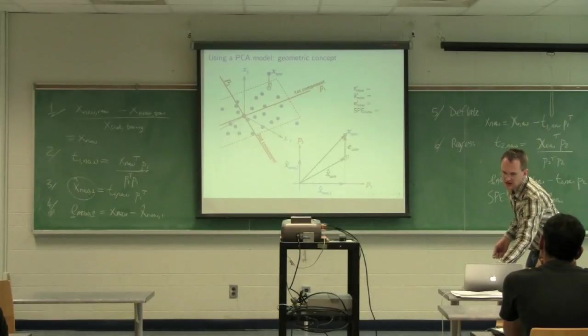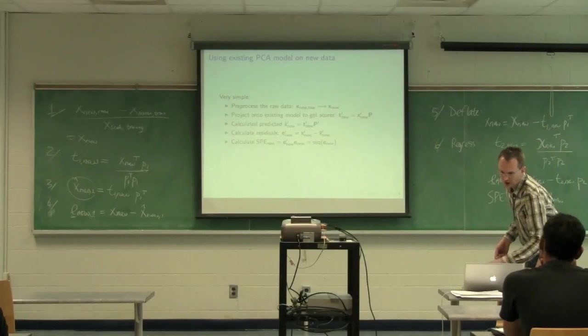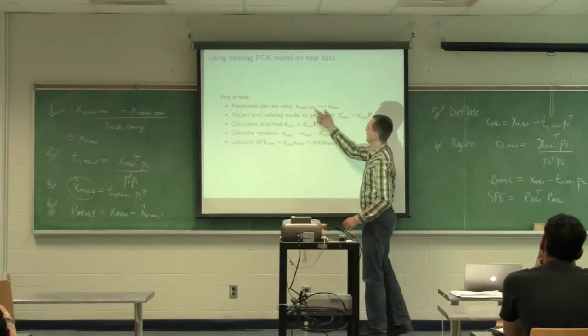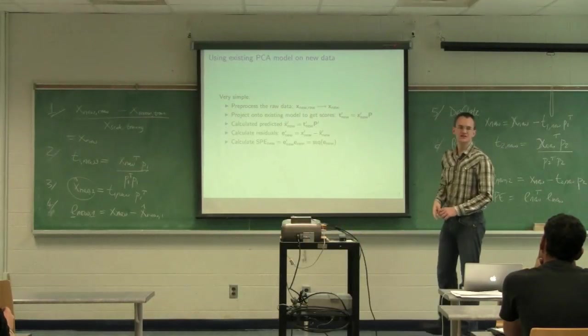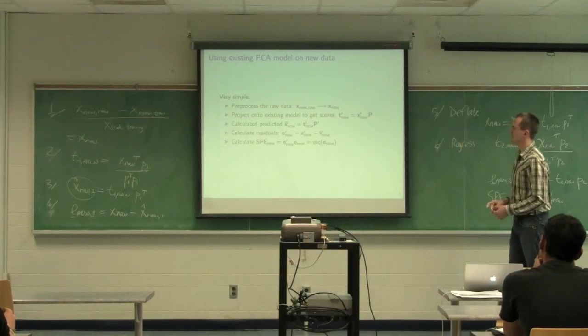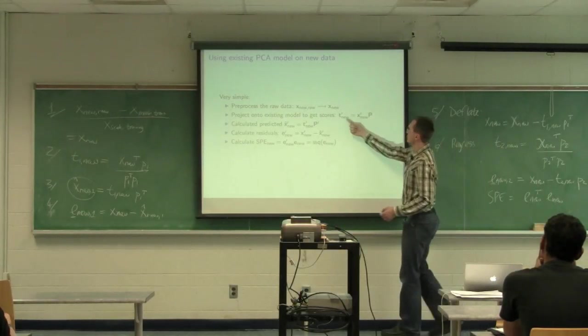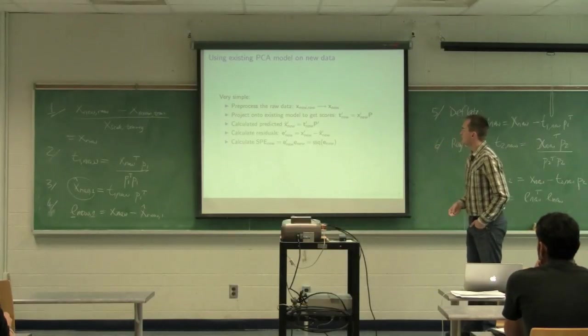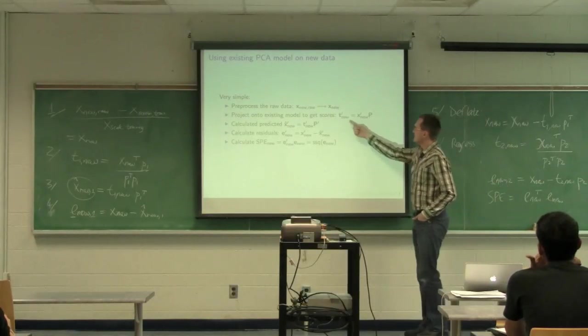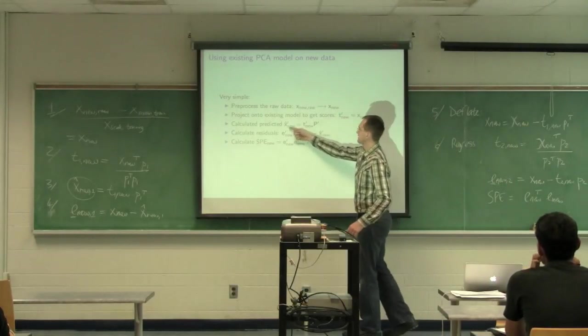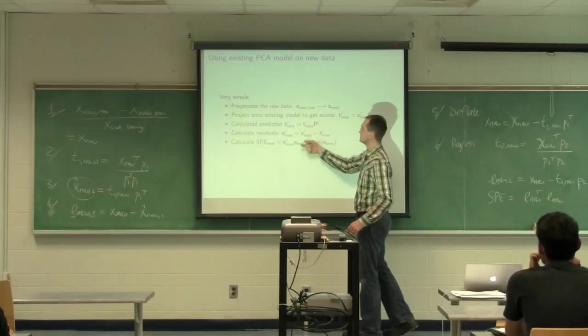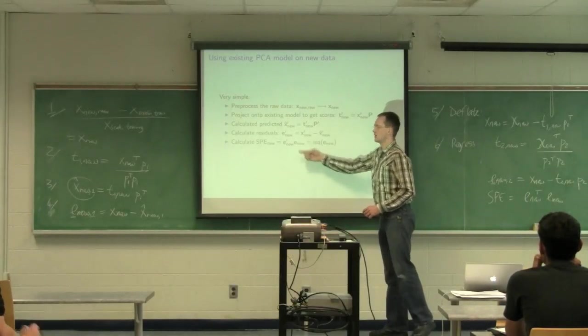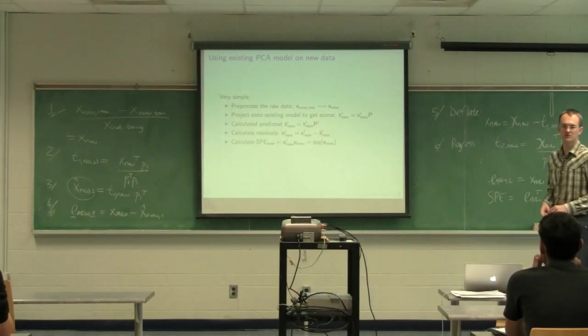You can of course do all these calculations in one go. So here I've got a slide. You just convert your x_raw data to x_new. This isn't in your notes. This is just added. You can calculate t_new in one go by just multiplying x_new by p. Once you get t_new, you calculate x_hat by saying t p transpose, calculate the residuals in the usual way by saying x minus x_hat, and then calculate SPE by saying the sum of squares.